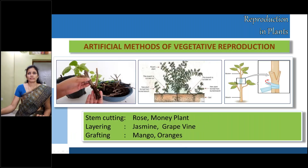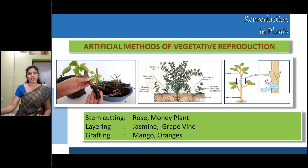Along with vegetative propagation, there are some more methods — artificial methods of vegetative propagation. The natural methods we have already learned. The first picture shows stem cutting; examples are rose and money plant. The second method shown is layering — jasmine and grapevine reproduce through layering. The third method is grafting — many fruit trees like mangoes, oranges, apples, and guava reproduce through grafting. You will learn about these in detail in your higher classes.